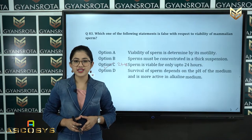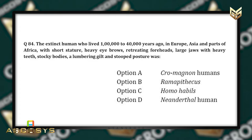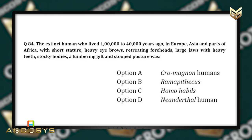Now question number 84: The extinct human who lived 1,040,000 years ago in Europe, Asia and parts of Africa, with short stature, heavy eyebrows, retreating foreheads, large jaws with heavy teeth, stocky bodies, a lumbering gait and stooped posture was — Option A: Cro-Magnon humans, Option B: Ramapithecus, Option C: Homo habilis, Option D: Neanderthal human.